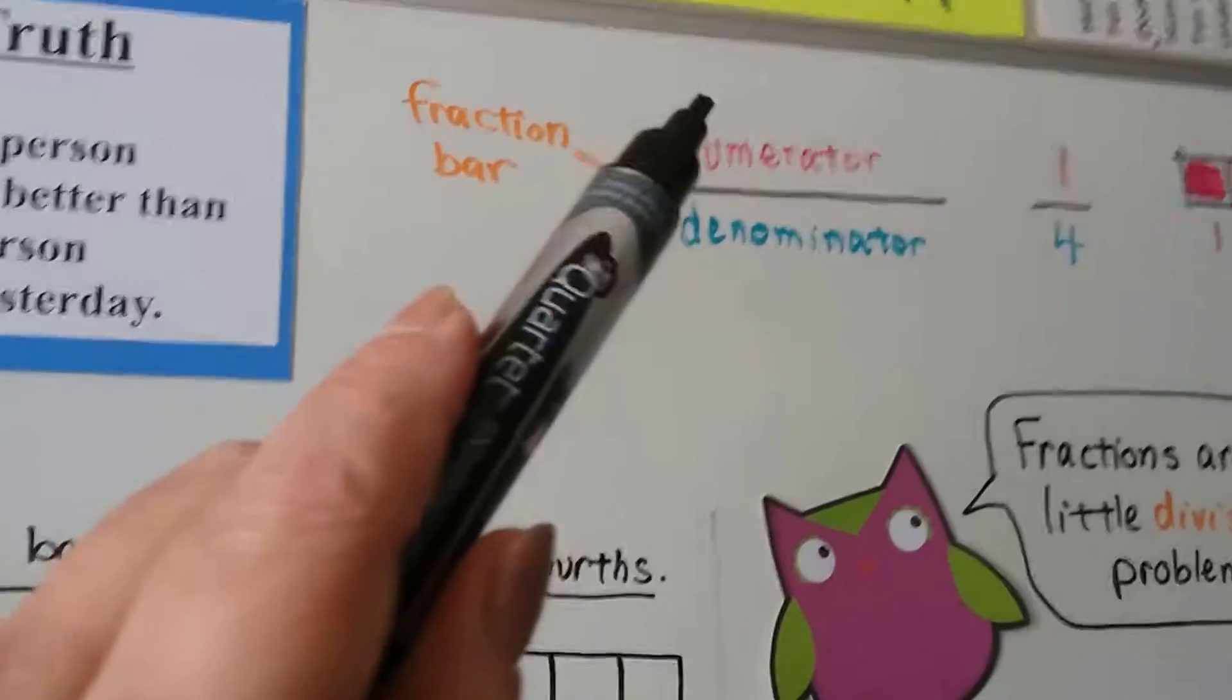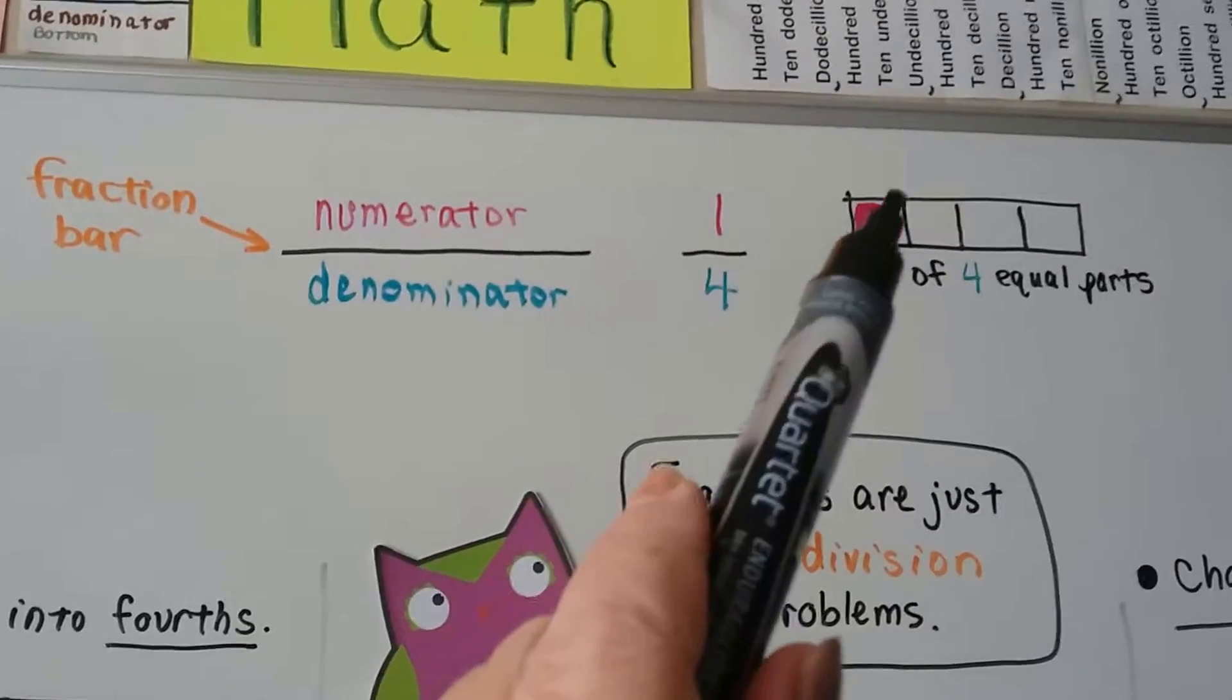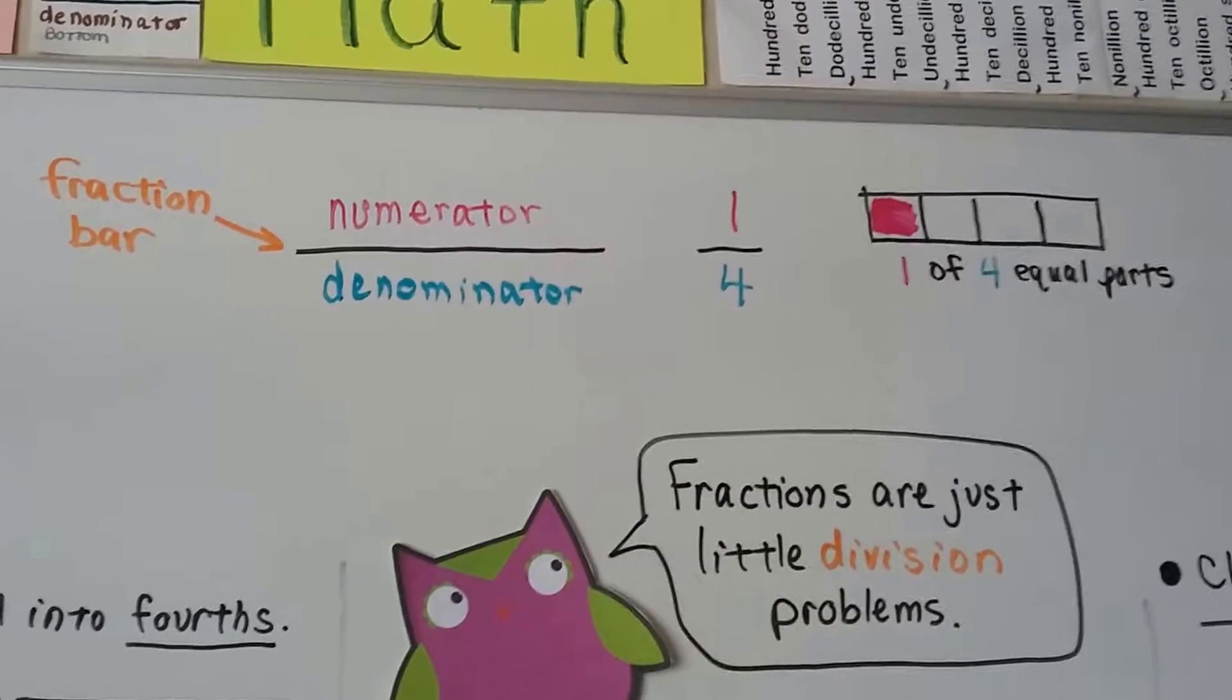Remember, we have a numerator, a denominator, and it's separated by a fraction bar, and 1 fourth would be one of four equal parts are shaded.